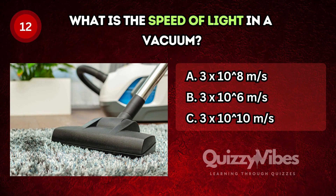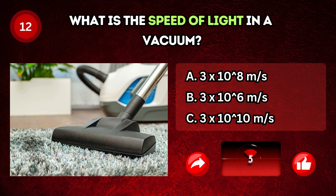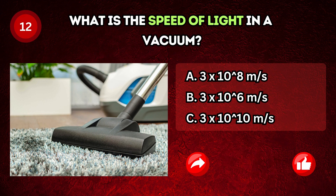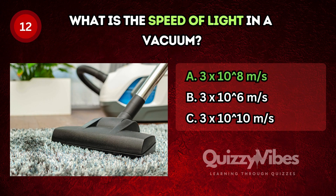What is the speed of light in a vacuum? Answer A, 3 multiplied by 10 to the eighth meter per second.